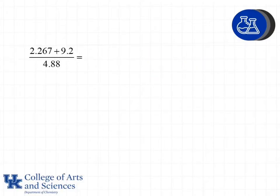Let's look at another example of the same thing with mixed calculations. Here we have 2.267 plus 9.2, and we find that the result of that is 11.437.